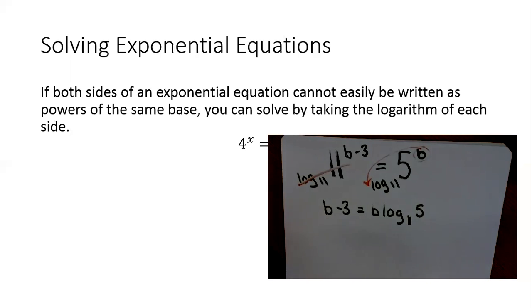Now in this problem, I have two b's, so I need to get those b's together. That way I can factor it out and solve. So I'm going to subtract this b log base 11 of 5 over, and I'm going to add the 3. So I'm going to have b minus this b log base 11 of 5, and now it's going to be equal to 3.